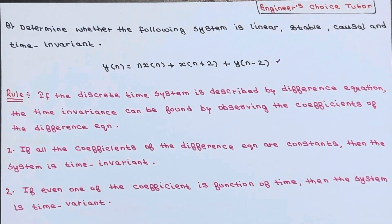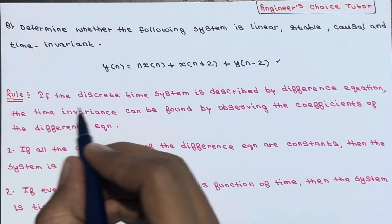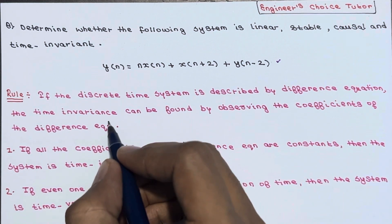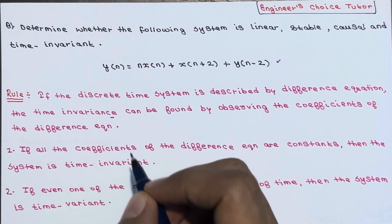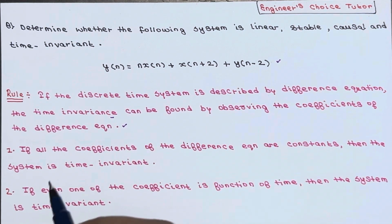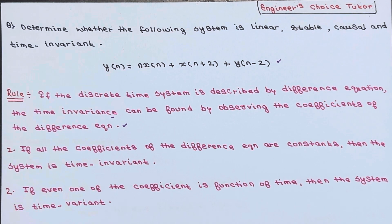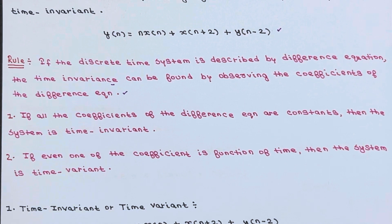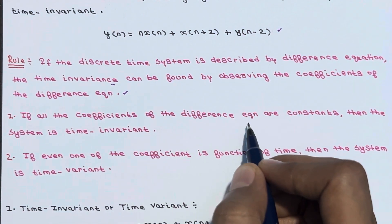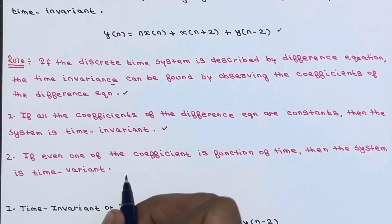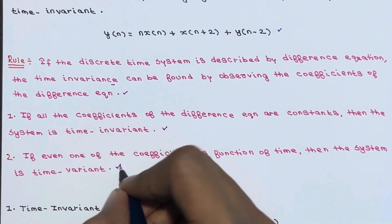You should be aware about one rule. If the discrete time system is described by a difference equation, time invariance can be found by observing the coefficients. If all the coefficients are constants, the system is time invariant. If even one coefficient is a function of time, the system is time variant.